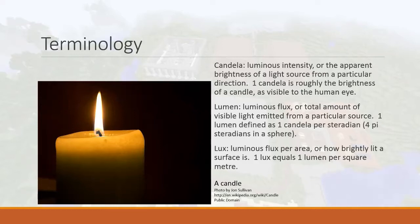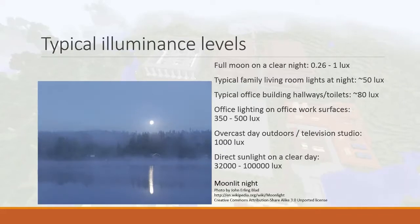Lux is what we usually talk about — how bright is this table, how bright is that wall? Looking at some typical illuminance values: a full moon on a clear night is about 0.26 to 1 lux. If you're out in the wilderness with a full moon and no other light around you, the amount of light on the ground is about 1 lux — not very much.